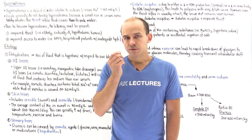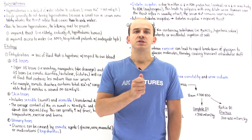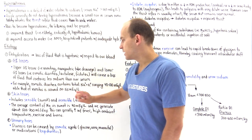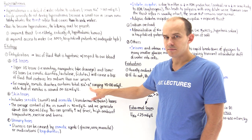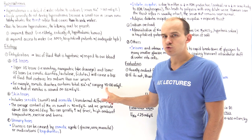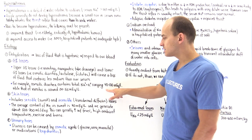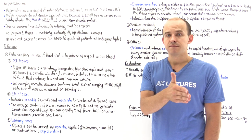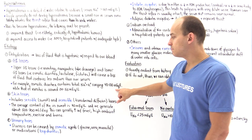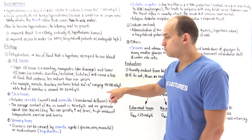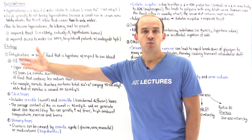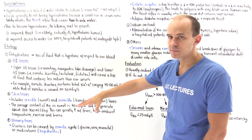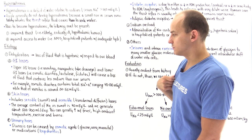If we lose fluid from the GI tract, we're losing hypotonic fluid. For example, osmotic diarrhea contains a total sodium plus potassium level ranging between 40 to 100 milliequivalents per liter, compared to the serum sodium concentration of 135 to 145. This is clearly hypotonic with respect to our blood, so losing it means we're losing more free water relative to sodium, creating a deficit of free water.